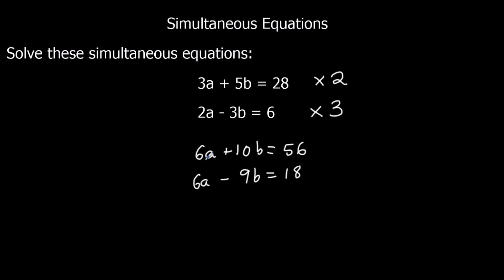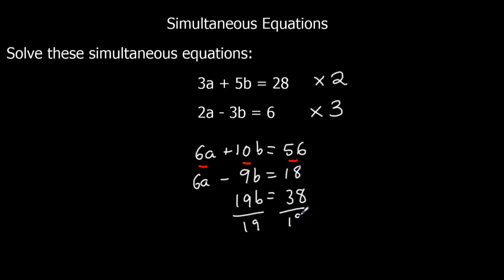To eliminate them I'm going to have to take them away. 6a minus 6a is nothing. So 10b minus minus 9b — minus minus makes a plus — so that's 19b. And 56 take away 18 is 38. Now divide both sides by 19, so b is equal to 2.